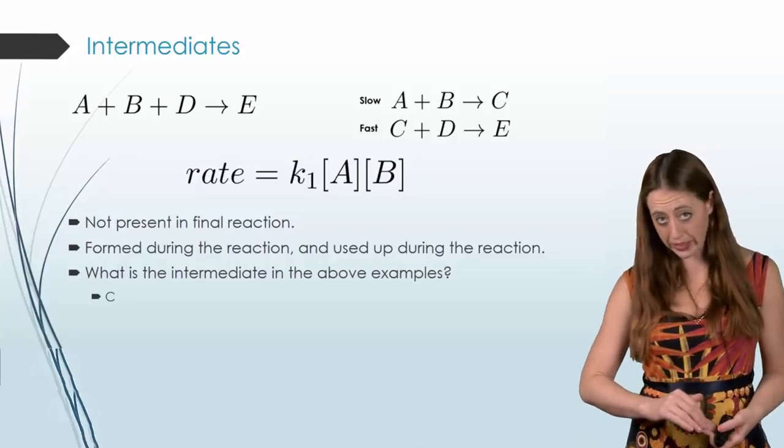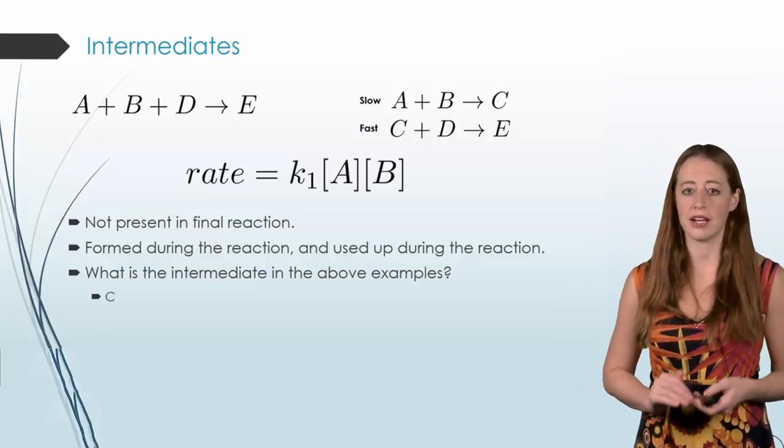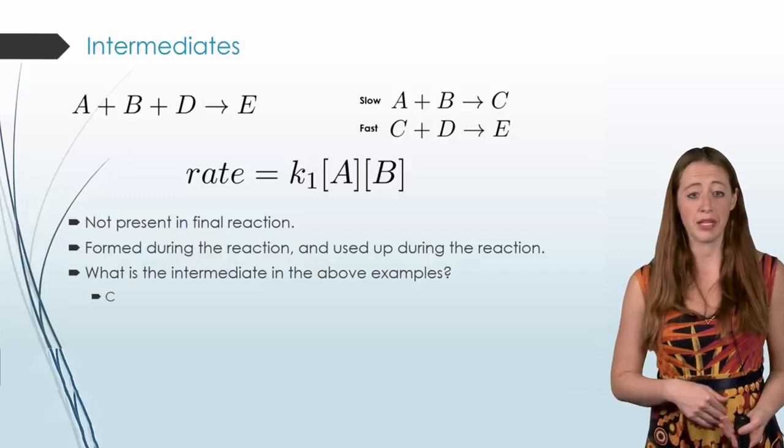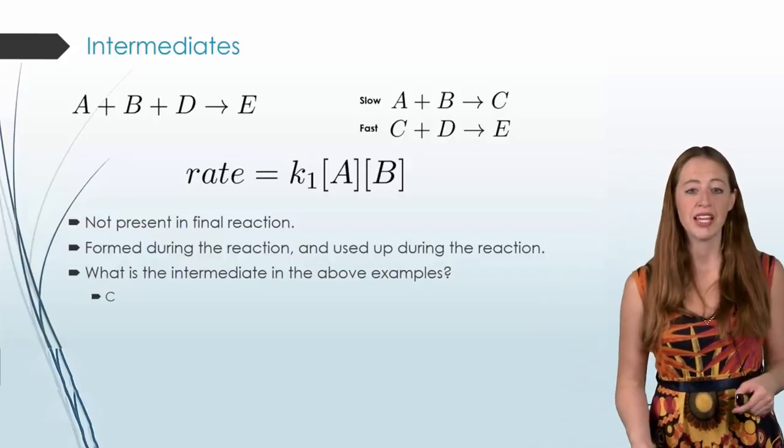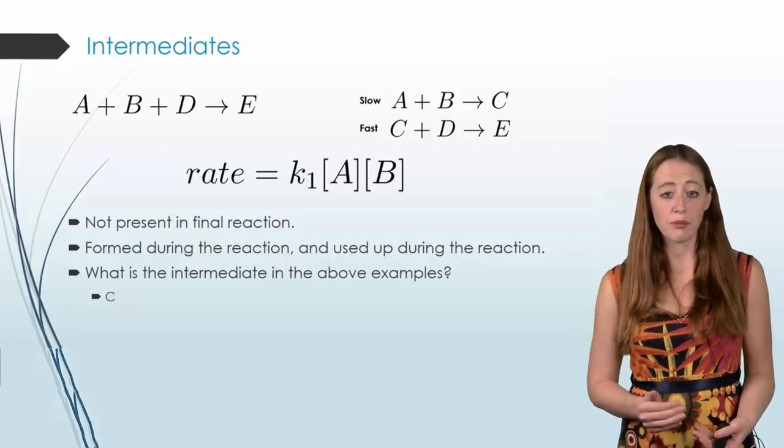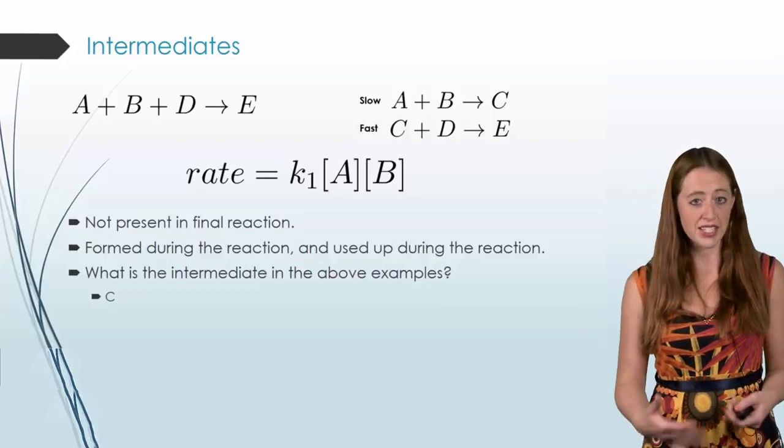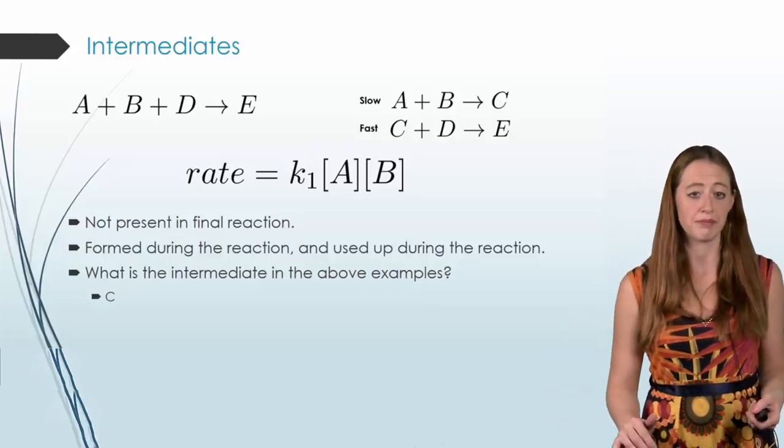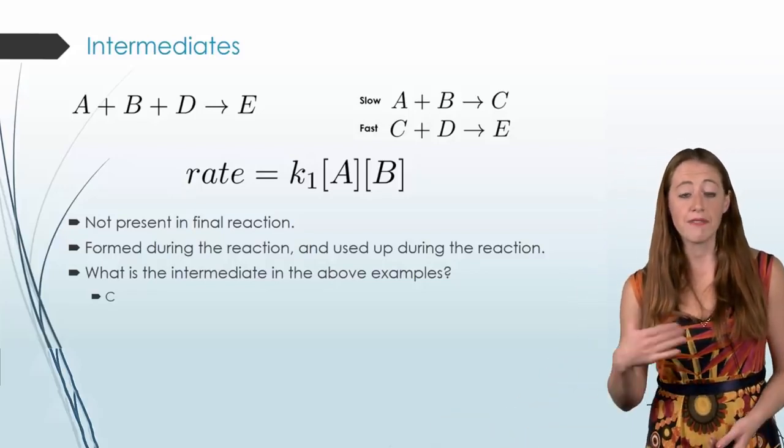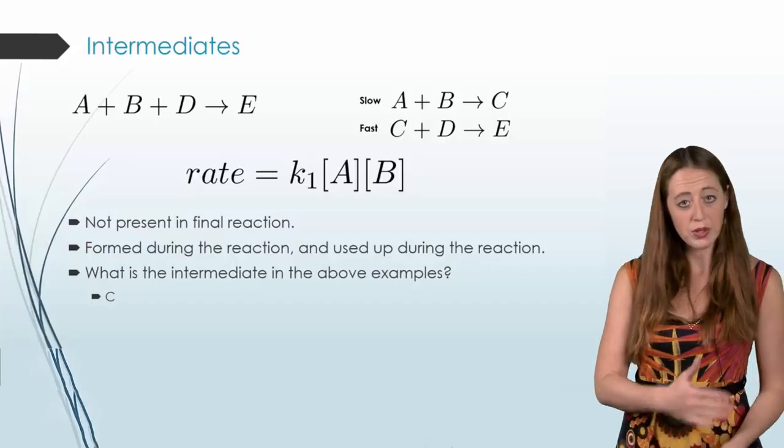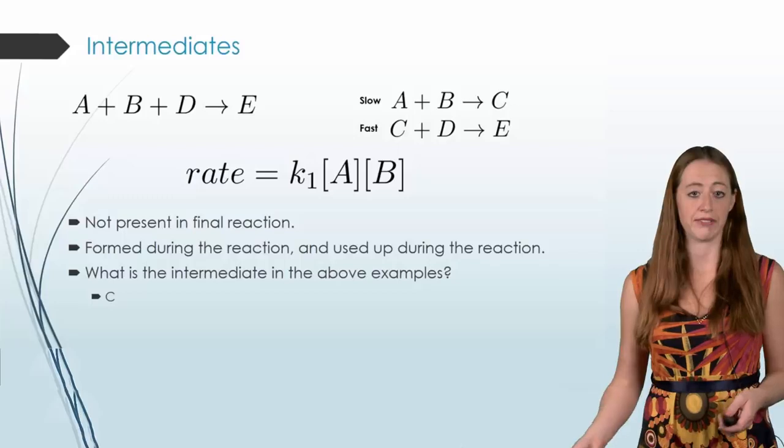Now something that's very, very important is that your intermediate never be in your rate law. You're not allowed to have that happen. And I set this example up specifically so that it wouldn't happen for us, so that we could talk about it. If you look here, we have A and B. And we wrote this rate law based on our slow reaction, because that's what slows the reaction down, that's the rate limiting step. And there was no intermediate there. And so this wasn't a problem. If it is a problem, if you do have an intermediate in your rate law, we have to fix that. And we'll talk about that in the following videos.